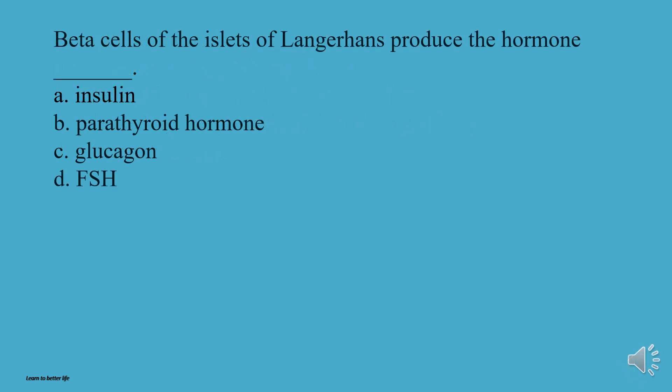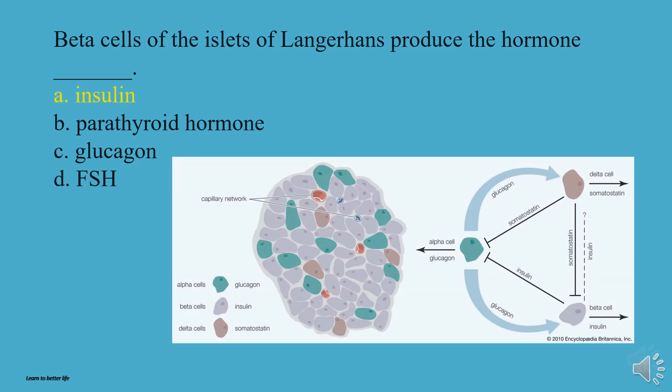Beta cells of the islets of Langerhans produce what hormone? A, Insulin. B, Parathyroid hormone. C, Glucagon. D, FSH. The answer is A, Insulin.